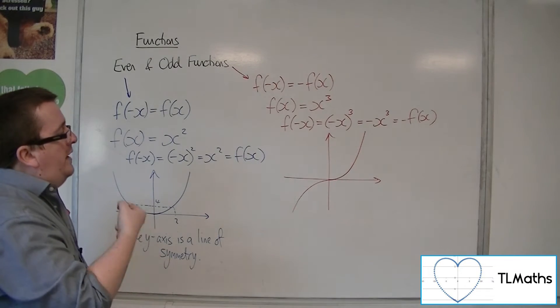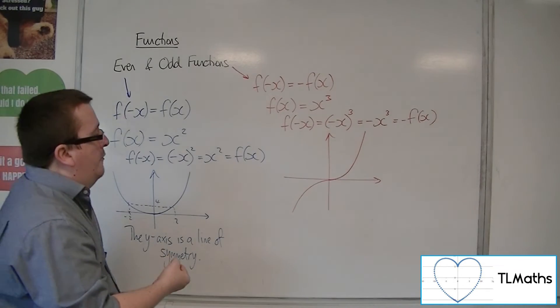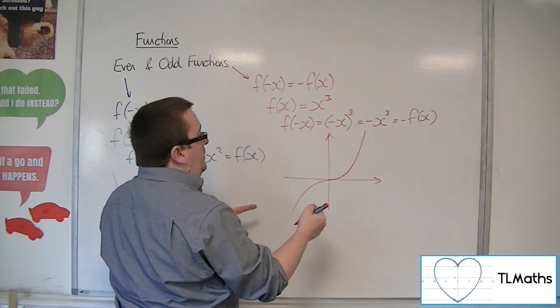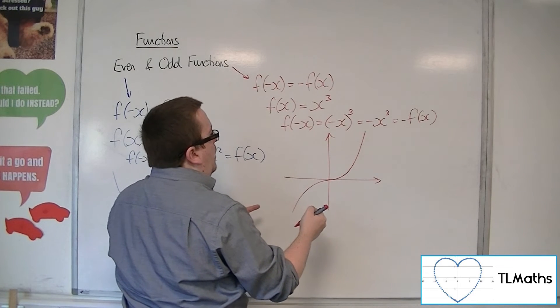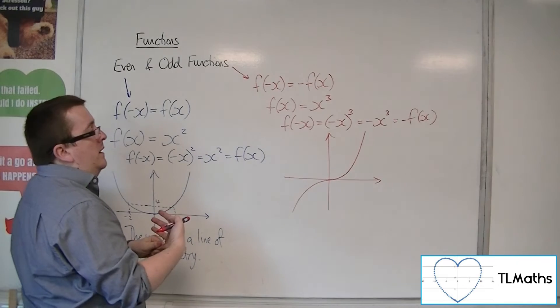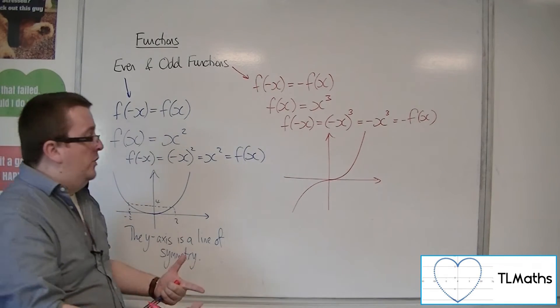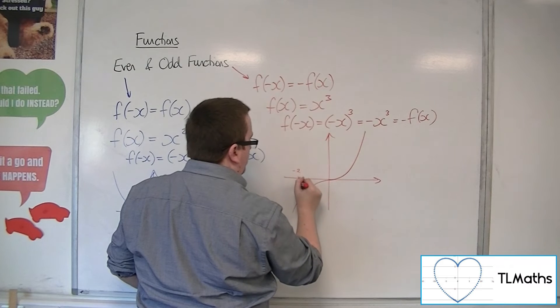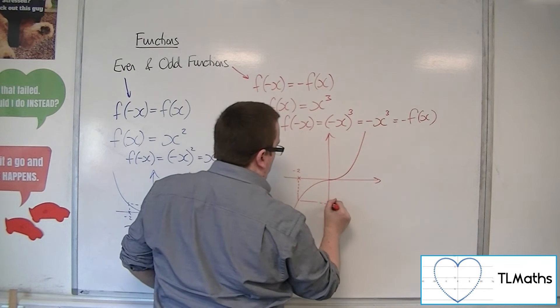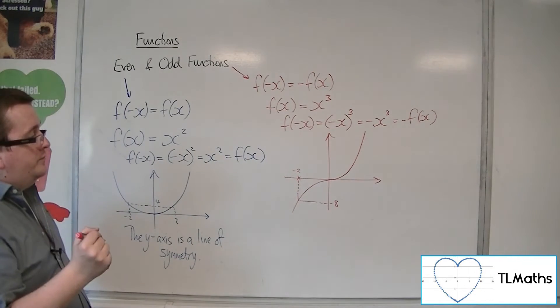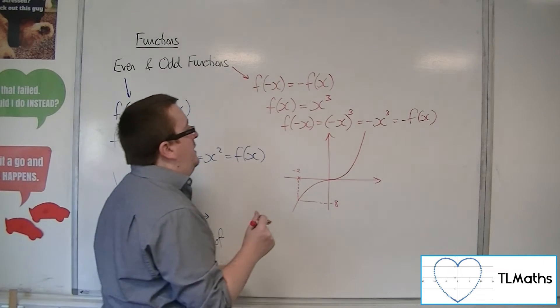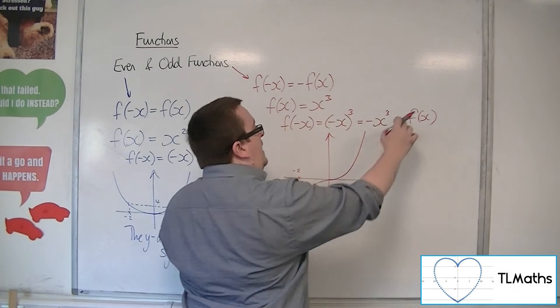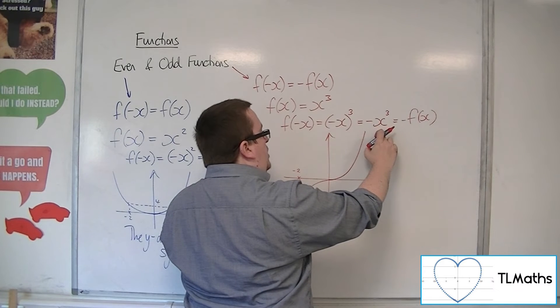Now this is coming through from the fact that if I choose a value of x, so let's say x equals minus 2. So here's my minus 2, that point is at minus 8, which is the same as doing minus f of x minus 2 cubed.